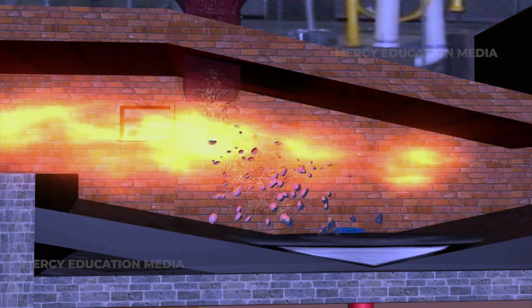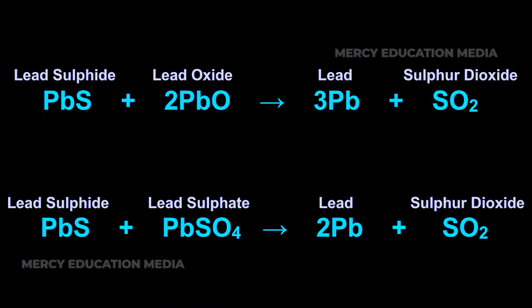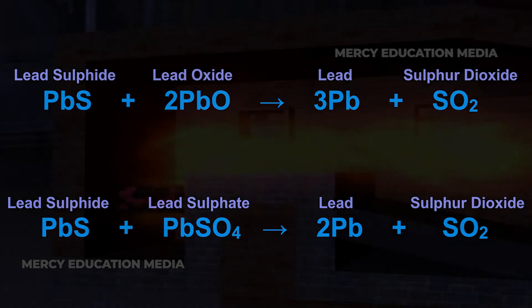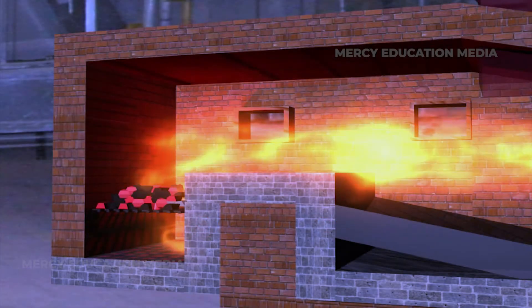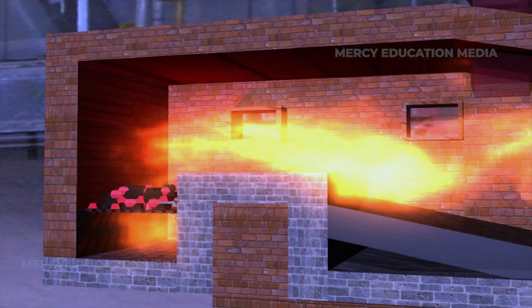Lead sulfide reacts with the two oxidized products giving lead. PbS + PbO gives Pb + SO₂. PbS + PbSO₄ gives Pb + SO₂. Thus in this process, roasting and smelting are carried out in the same furnace at two different temperatures.